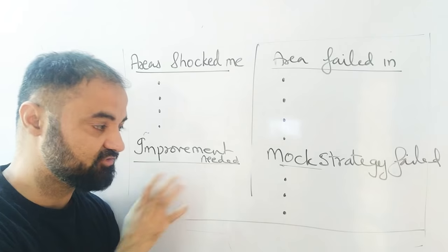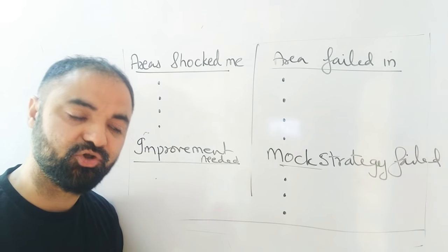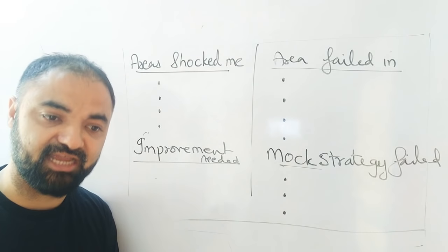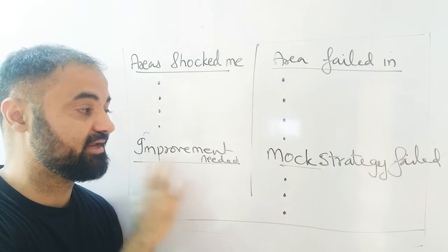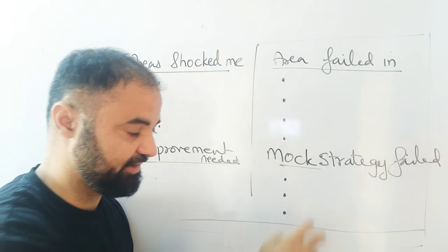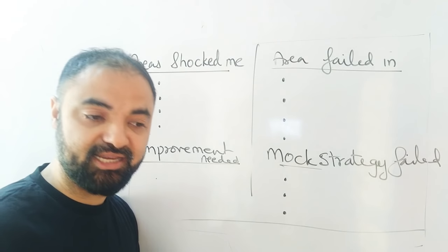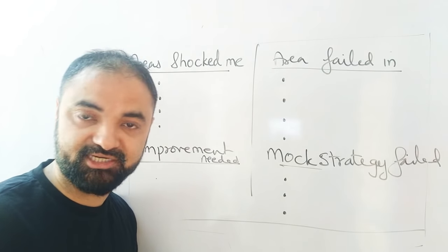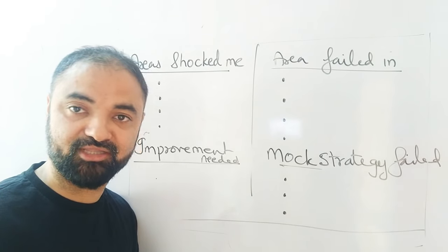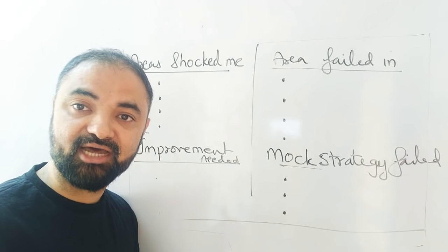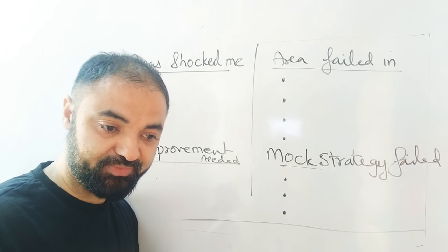Improvement needed: these are the areas where I need more improvement — pointer 1, 2, 3. Areas or strategy, time strategy, accuracy. And lastly, mock strategy failed. These are the three areas where my mock strategy failed — for example, I spent too much time on logic. You will understand all these mistakes, because there will be mistakes.